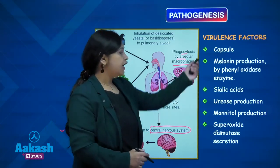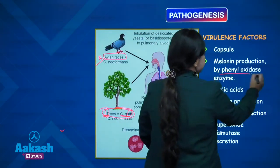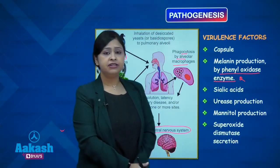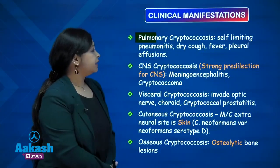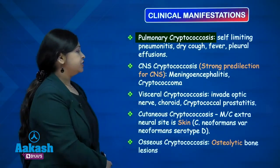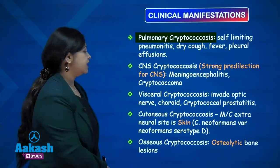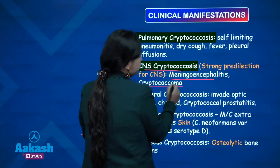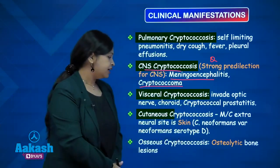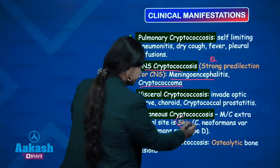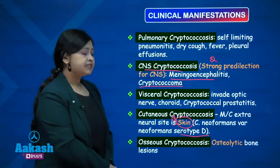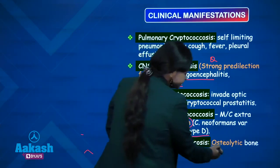The virulence factors for this fungus include the capsule, melanin production by a specific enzyme, sialic acids, production of urease, mannitol production, and superoxide dismutase secretion. Clinical manifestations: pulmonary cryptococcosis occurs but is self-limiting with dry cough and pneumonitis. The most common manifestation is CNS infection with meningoencephalitis and cryptococcoma, as this fungus has a strong predilection for the CNS. The most common extra-neural site is skin, and serotype B is the most common type causing skin infection. Osseous cryptococcosis occurs with bone involvement producing osteolytic lesions.